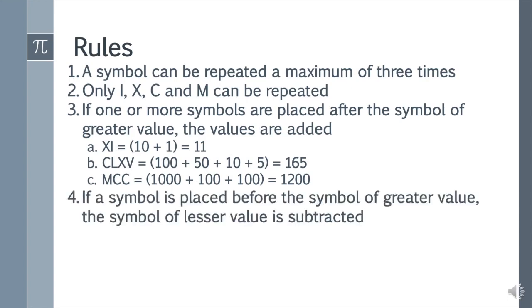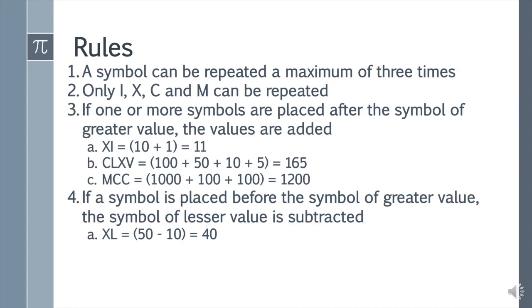If a symbol is placed before the symbol of greater value, the symbol of lesser value is subtracted. XL: 50 minus 10 equals 40. XCVII: when a smaller letter is placed on the left of the bigger letter it means subtraction — so 100 minus 10 plus 5 plus 1 plus 1 plus 1: 100 minus 10 is 90, plus 5 is 95, 96, 97. Only I, C, X can be subtracted. V, L or D cannot be subtracted. Subtract only one number from another.